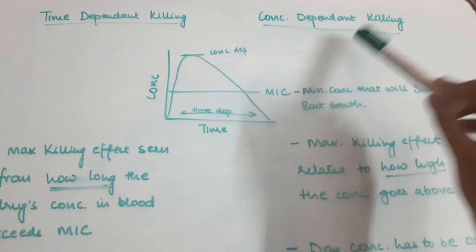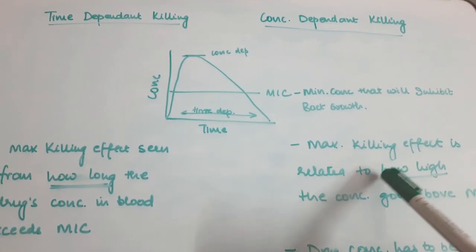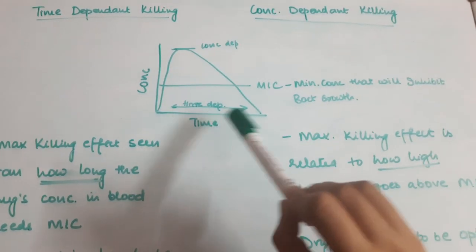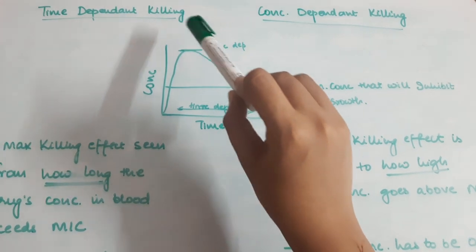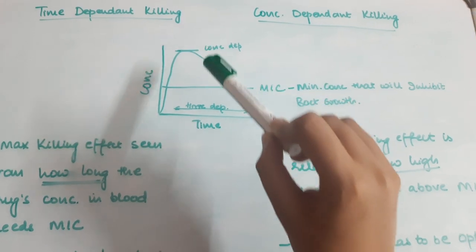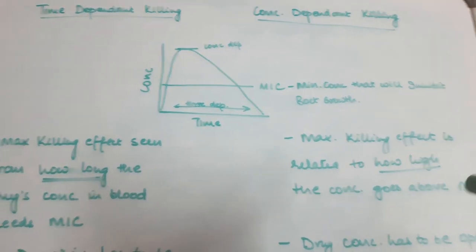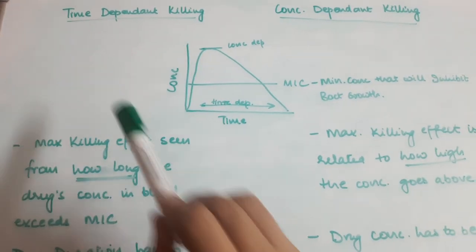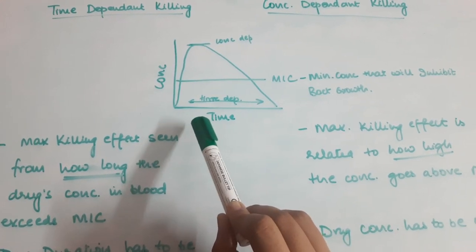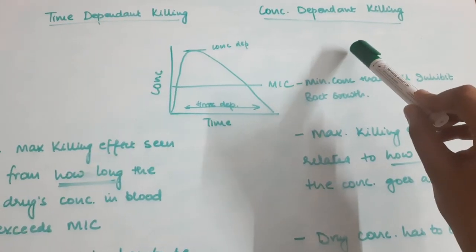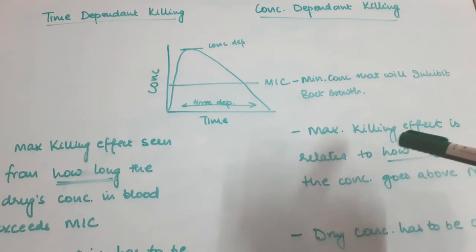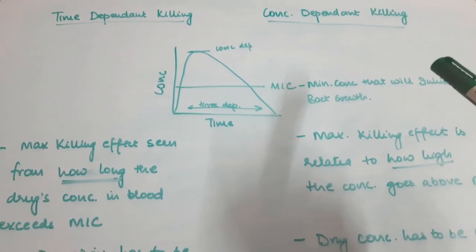Whereas in concentration-dependent killing, the maximum killing effect is related to how high the concentration goes above MIC. So it will not be time-dependent — it will be dependent on how high above the MIC it goes. It needs to attain a very high concentration in order to bring about killing. So time-dependent depends on how long the concentration exceeds MIC, and in concentration-dependent, it depends on how high the concentration goes — how much peak it attains.